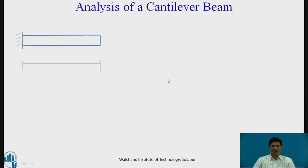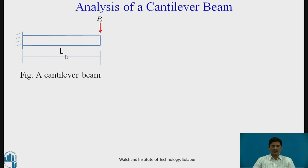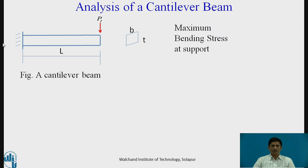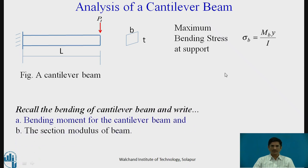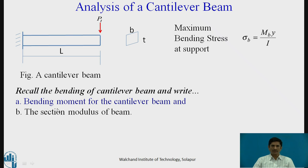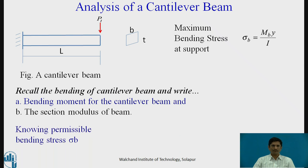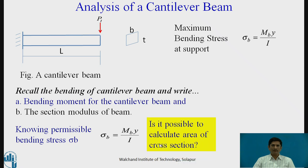Let us think of a cantilever beam with a point load Pt. The span of the beam is L, and the cross section is taken as Bt. The maximum bending stress at the support can be written as sigma B equals MB times y divided by I. We can recall the bending of a cantilever beam and write the bending moment and the section modulus. If we know the permissible bending stress sigma B and bending moment, can we calculate the area of cross section?